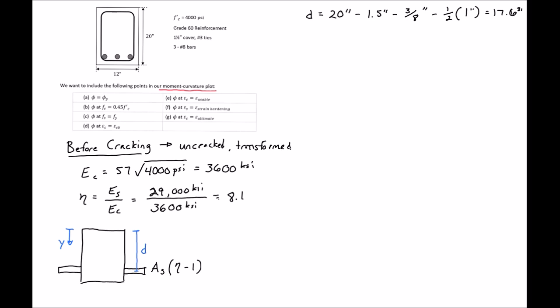The next property we can find is the area of our steel. We have 3 number 8 bars at 0.79 square inches each, giving us a total steel area As of 2.37 square inches.